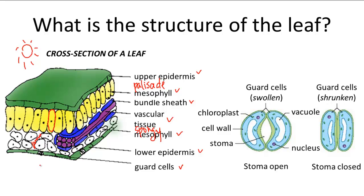Both types of mesophyll cells receive the necessary water from the vascular tissues and carbon dioxide from the guard cells. We're more familiar with the openings that the guard cells create, which we know as the stomata, or stoma for singular, and these cells are embedded into the lower epidermis, or the bottom-most layer of the leaf.